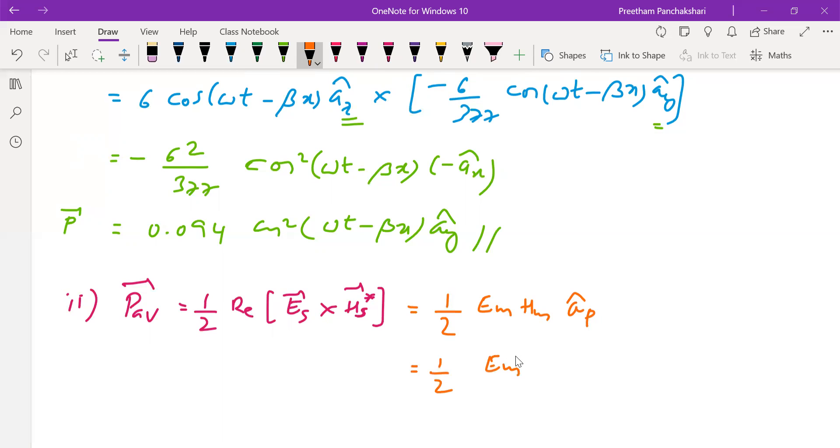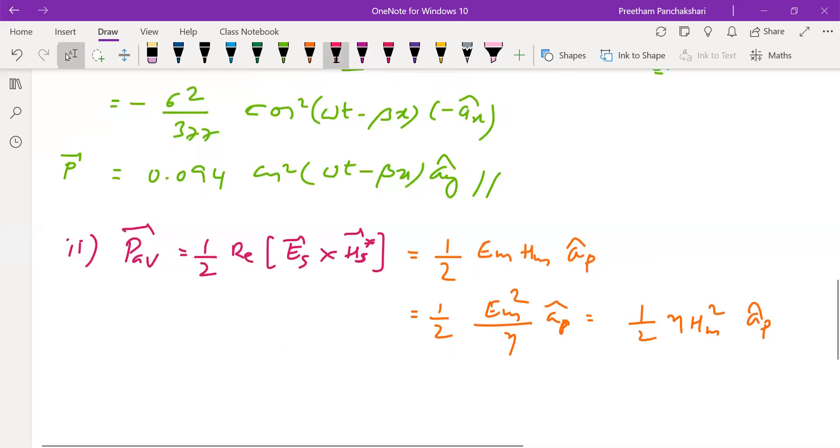Otherwise, we can go for this equation only considering E or only considering H. Here the direction of the unit vector has to be separately calculated, but this form gives directly both magnitude and direction.